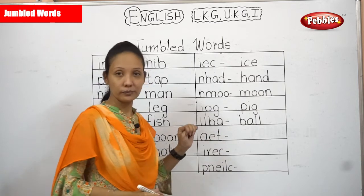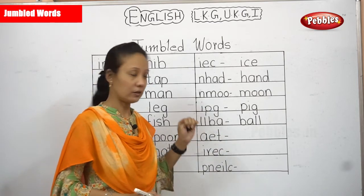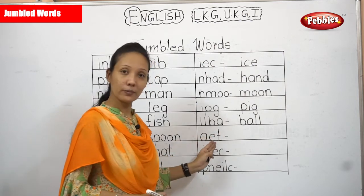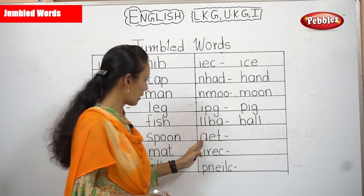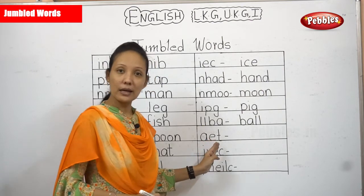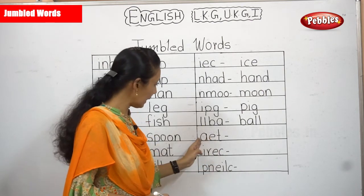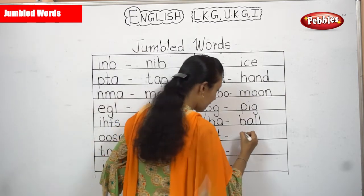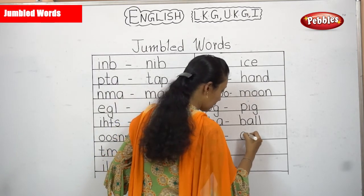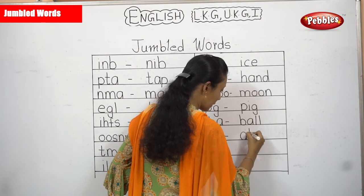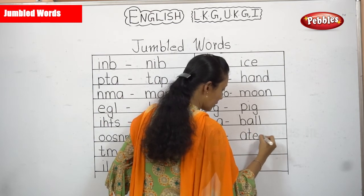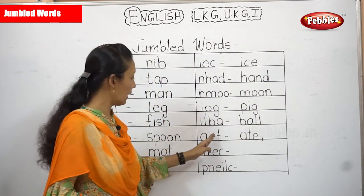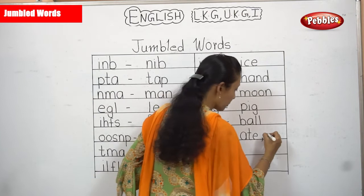Now A, E, T. Is there a word AET? No. What about ATE? Yes! You can write A, T, E. Otherwise, you can write E, A, T. So with this you can make two proper words — ATE and EAT. Both are here.